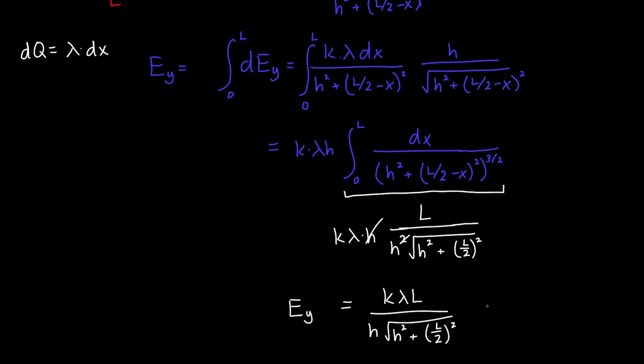Now, remember, if we were asked to give the vector electric field of the whole line charge, we would also need to specify the X component. And in particular, we said that by symmetry, the X component was 0. So this here is our answer.